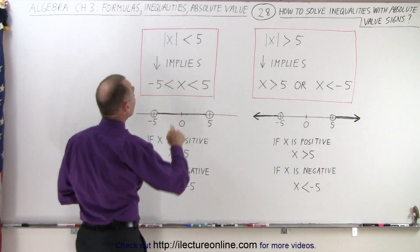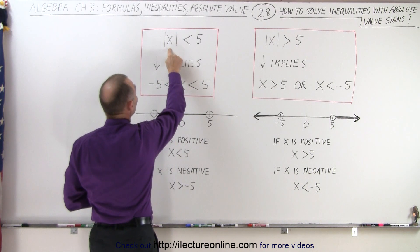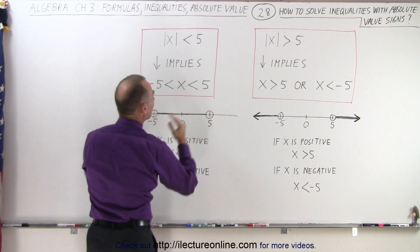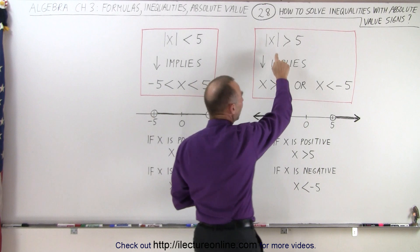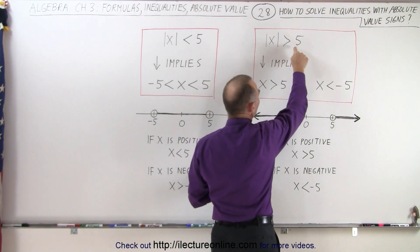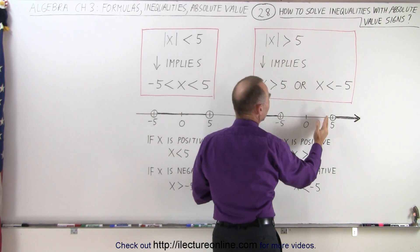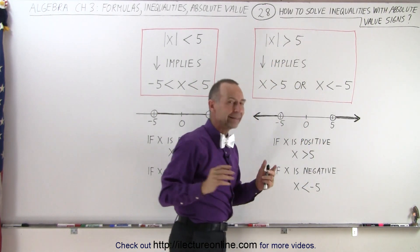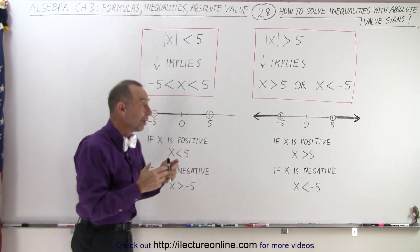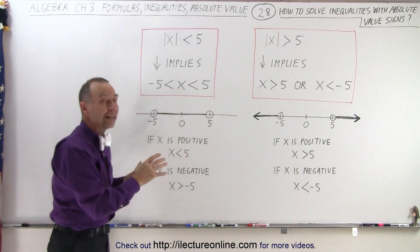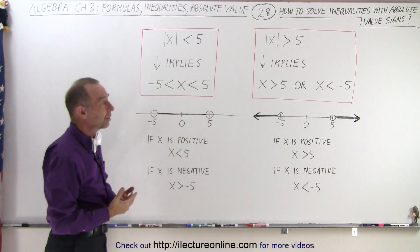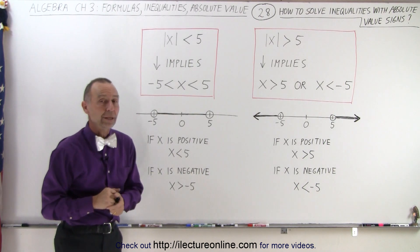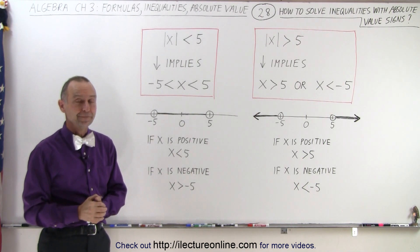So you can see that if the absolute value of x is less than 5, x falls between plus or minus 5. If the absolute value of x is greater than 5, then x is greater than 5 or less than negative 5. Once you understand that, those types of inequalities will become a lot easier to deal with.